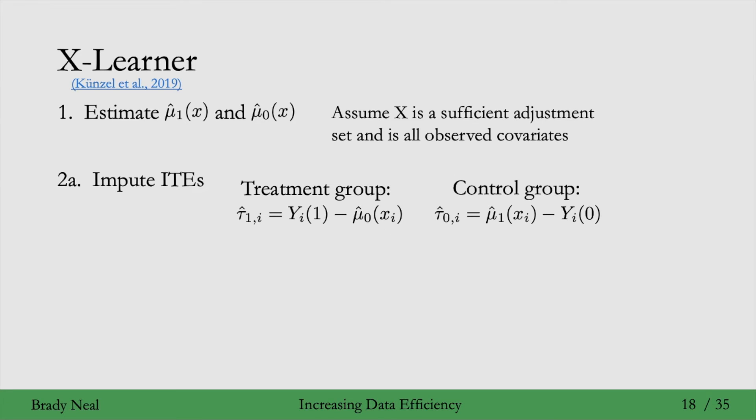The way we're able to use all of the data, not just one outcome in the treatment group, is doing what we do in step 2B. We fit a model tau1 hat of X to predict tau1 i right here, this ITE that we just got in the last step, from X i.